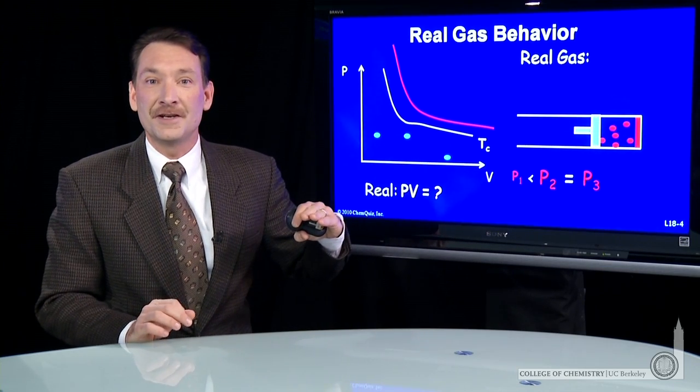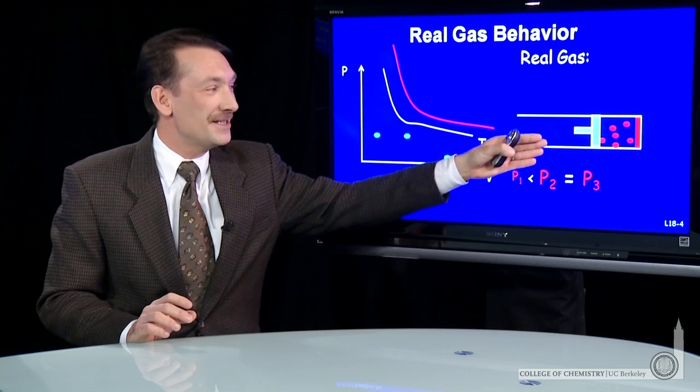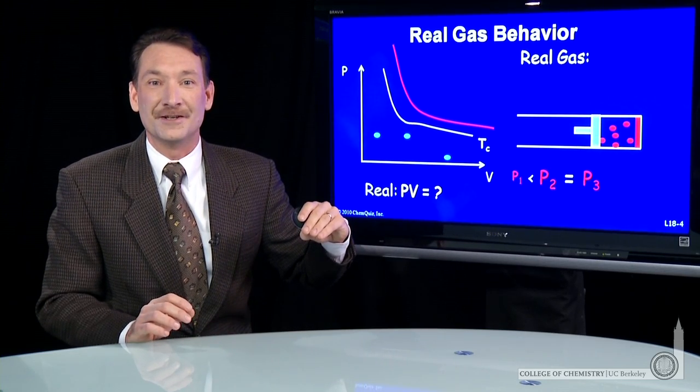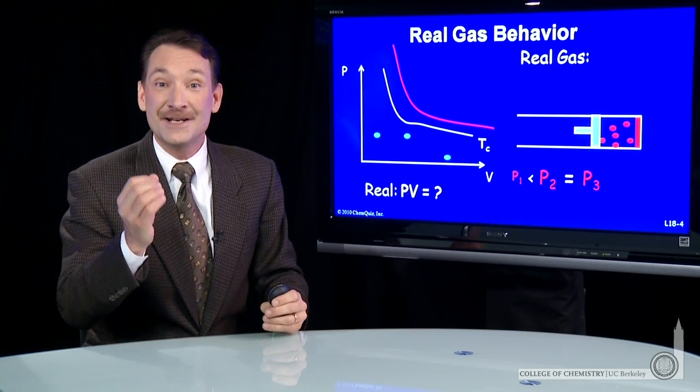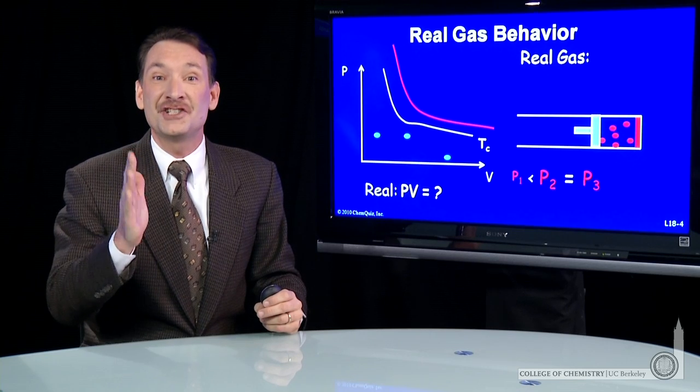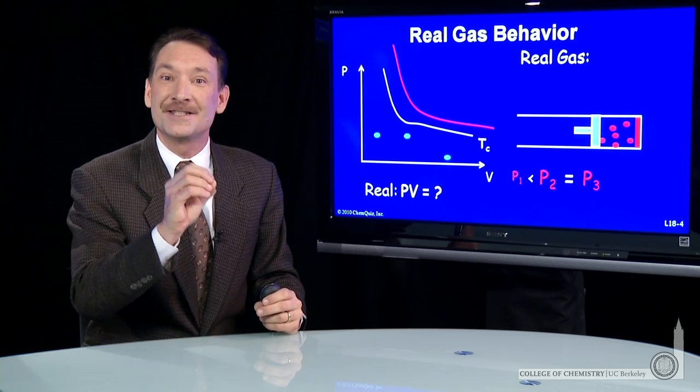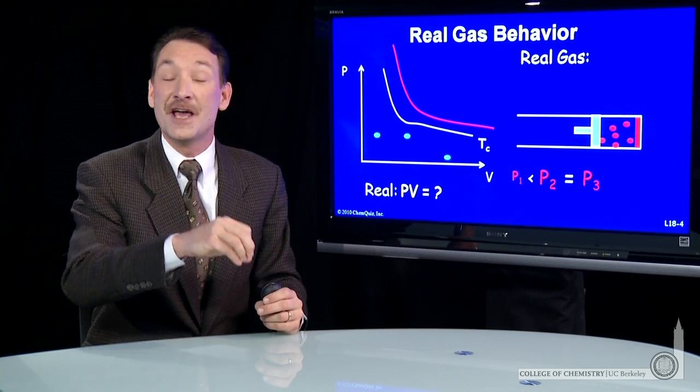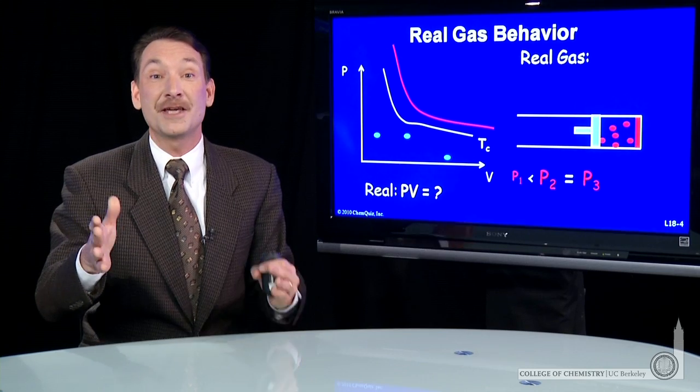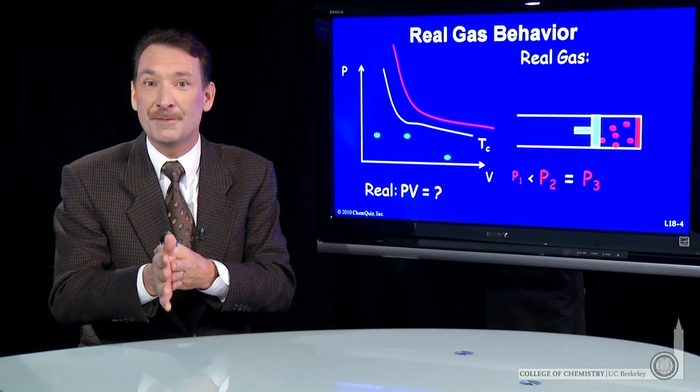But this is a fixed cylinder. How do I decrease the number of particles in that cylinder? Well, I can't decrease the number of particles, but I can change their phase. I can take some particles from the gas phase to the liquid phase, where they occupy very, very small volume by comparison.